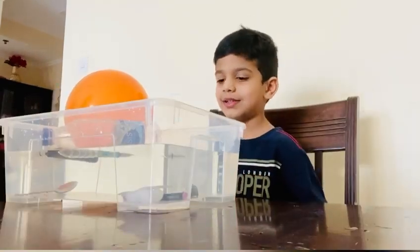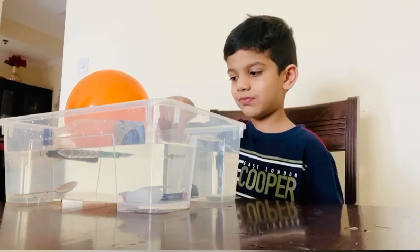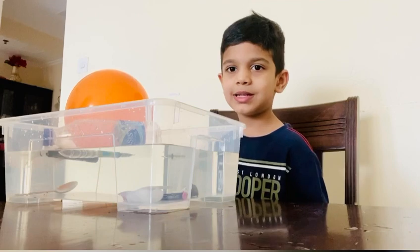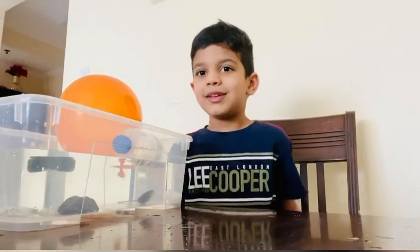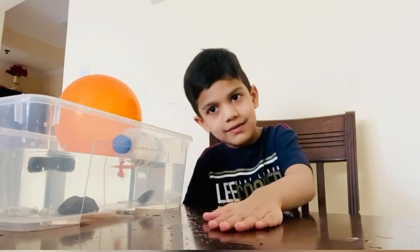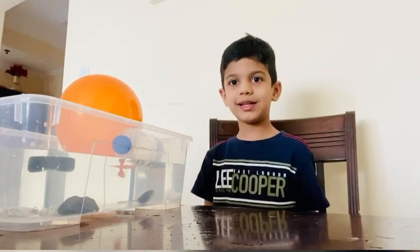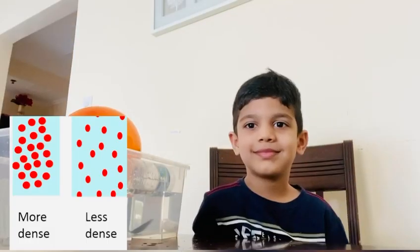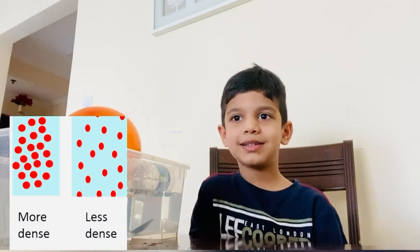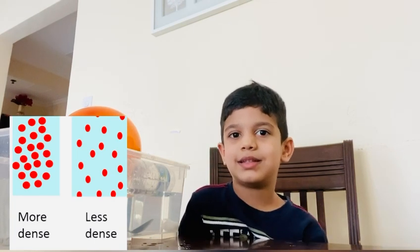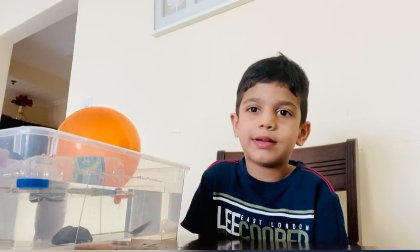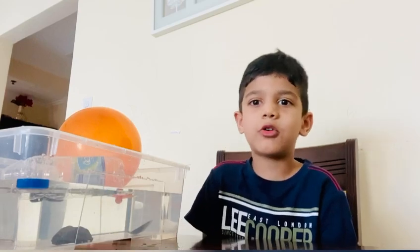Friends, did you see? Some objects float, some objects sink. Do you know why that happened? Because of density. Do you know what density is? Some objects are made from tiny particles. In some objects, particles are loosely packed and they have less density, and they will float. Objects with higher density sink.